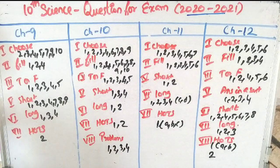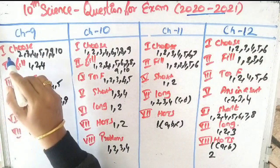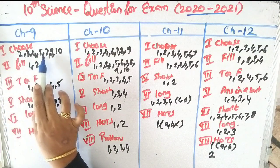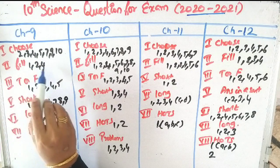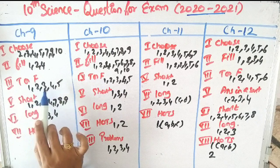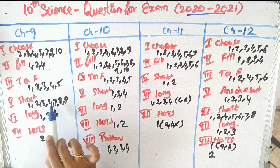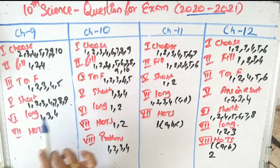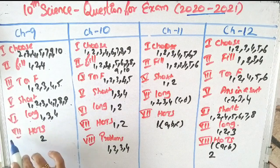In chapter 9, first row — choose: questions 2, 3, 4, 5, 7, 9, 10. Second row — fill the blanks: questions 1, 2, 4. Third row — true or false: questions 1, 2, 3, 4, 5. Fifth row — short answer: questions 1, 2, 3, 4, 7, 8, 9. Sixth row — long answer: questions 1, 3, 4. Seventh row — hard question: question 2.